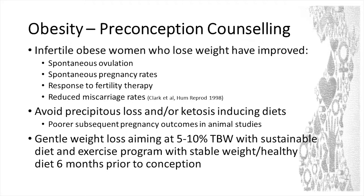When I see these ladies, weight is obviously the first thing to talk about. We know that if you can lose weight there's a higher chance of spontaneous ovulation, improved pregnancy rate, better fertility therapy response, and reduced miscarriage rate. So it should be as simple as putting everyone on a very low-energy diet for six months — but it's not quite that simple. There are animal studies suggesting that precipitous weight loss with a ketogenic diet prior to conception has poorer pregnancy outcomes including miscarriages.